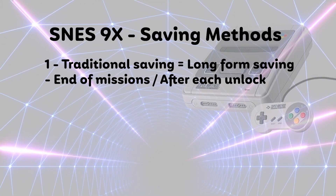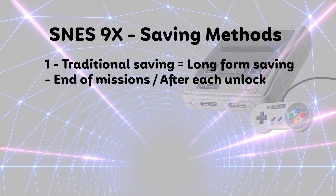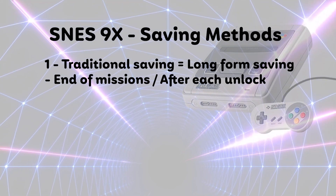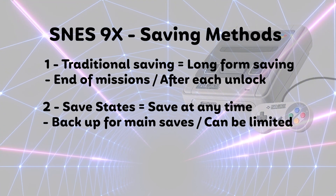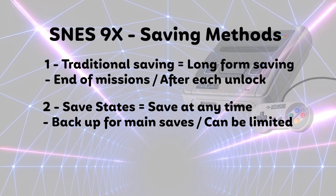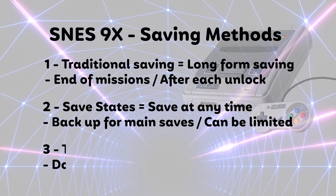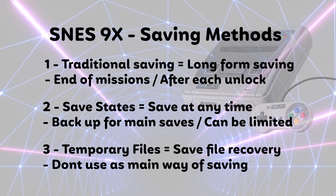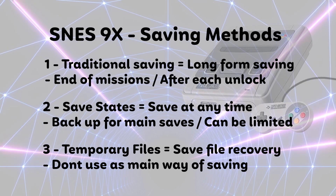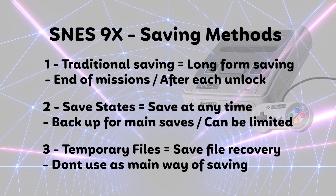To summarise: use the traditional saving method for what we're going to call long-form saving — end of missions, after each unlock, things like that. Use save states as backups for your long-form save, but also to save at any time within your game. But remember, these saves are limited. And finally, use the temporary save, the OOPS file, to get yourself back to where you were in case something goes wrong, such as a system or an emulator crash.